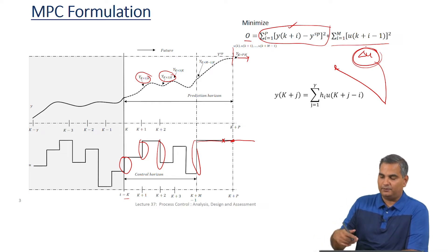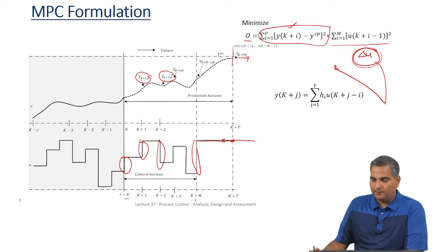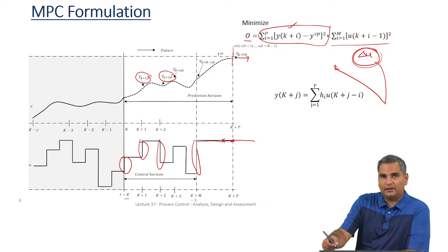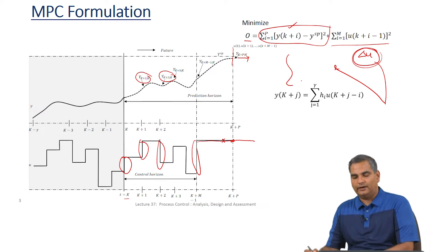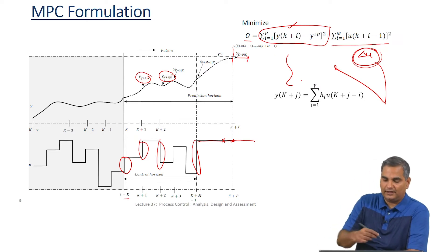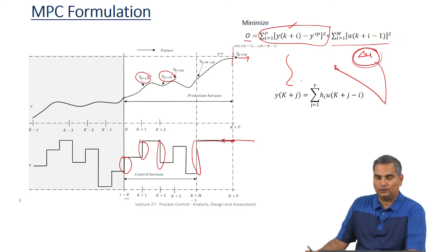Traditionally, people put the Δu penalty in the objective function and then weight the various terms to tune how aggressive the controller is. These two terms are definitely used; you could also use a third term for Δu, and on top of that you can also put constraints on u and Δu as explicit constraints. Remember, once we have converted this into an optimization formulation you can add any number of constraints as long as the problems remain solvable and meaningful.